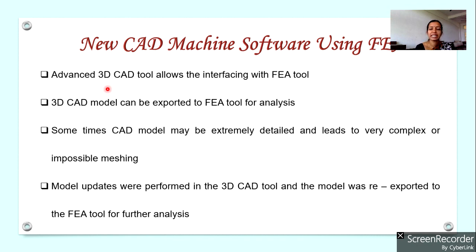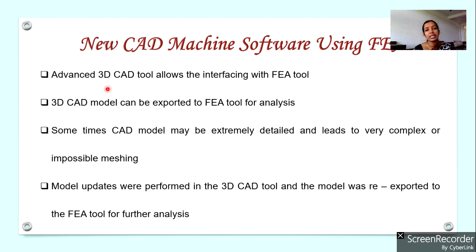FEA performs all these analyses on a model of the component. The FEA tool first performs discretization — it divides a continuous object into a number of finite elements and then calculates the behaviour of each element. For that, FEA initially needs a model. FEA itself has model generation capabilities; there are tools in finite element analysis software for generating models.